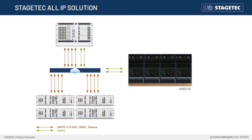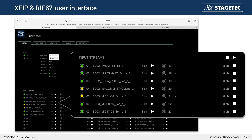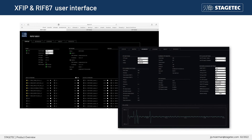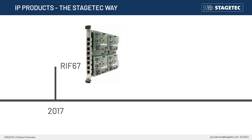Controlling the IP streams is according to ST2110 formats and SDP — session description protocol — parameters, so IP streams are easily managed for the incoming and outgoing streams. A crucial role in this transition to IP is held by the RIF67 and the XFIP boards, which interface Nexus to ST2110 formats.